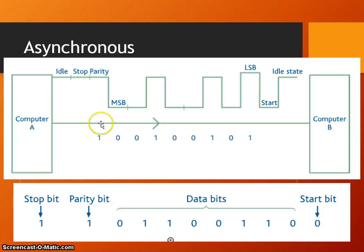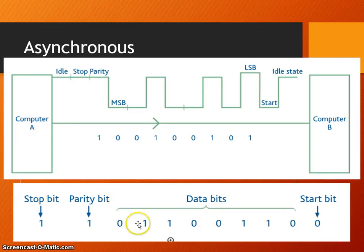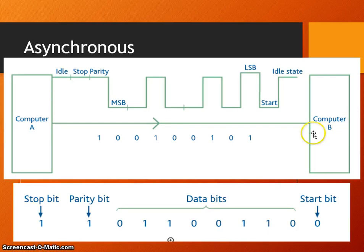Here's a diagram showing the data being sent: we have the data, a start bit, a parity bit, and a stop bit. The start bit indicates to the receiving device that it's about to receive data. The data is sent. The parity bit is used to check the correctness of the data and to indicate whether there's been an error in transmission, and whether the sending device needs to re-send it. The stop bit indicates to the receiving device that the transmission has ended and the data can now be processed.